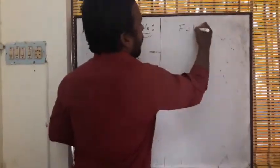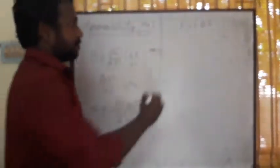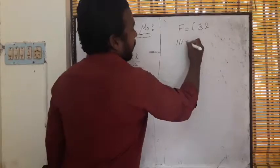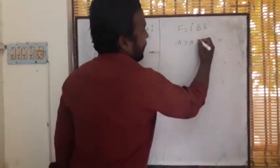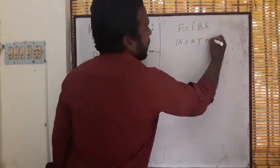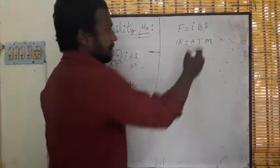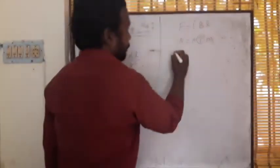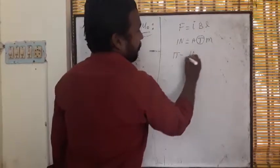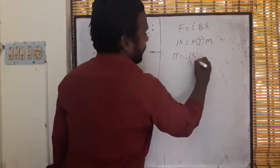F is equal to I B L according to the Lorentz force. F is Newton, I is ampere, current is ampere, magnetic field is Tesla, length is meter. That means 1 Tesla is equal to Newton by ampere meter.